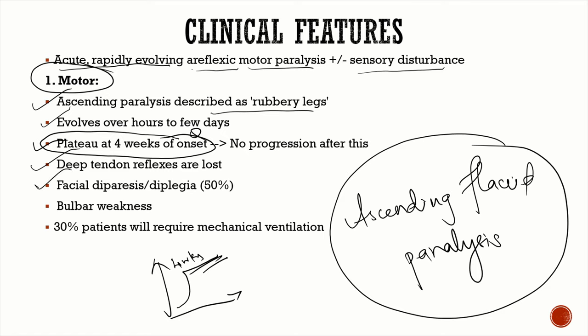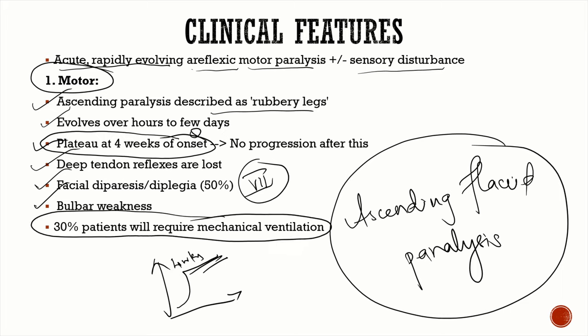One of the most common cranial nerves involved in GBS is the facial nerve, presenting as bilateral lower motor neuron facial nerve palsy or facial diparesis. Other cranial nerve involvement can cause bulbar weakness, difficulty managing secretions, and aspiration pneumonia. Importantly, 30 percent of patients will require mechanical ventilation, making ICU management essential.